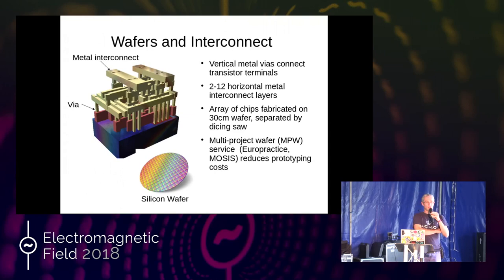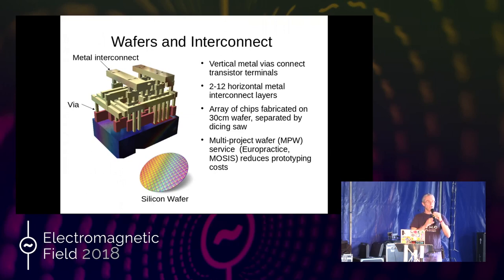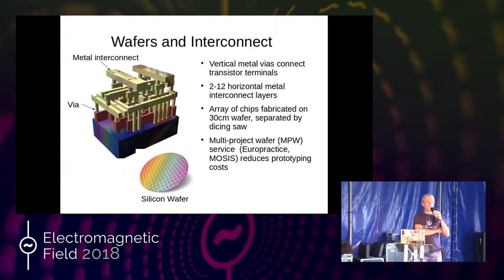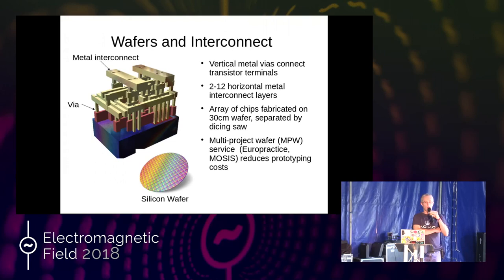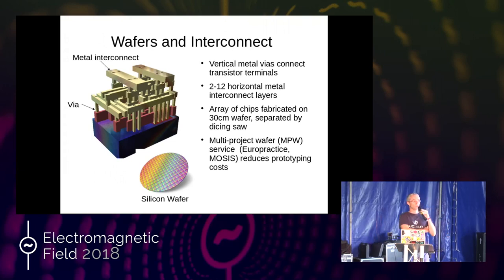On a chip you have transistors, resistors, capacitors, and inductors. To interconnect them you have metal layers, with vertical metal vias coming up from each device, and typically between 2 and 12 metal layers. Chips are fabricated on silicon wafers typically 30 centimeters in diameter, and after fabrication the chips are separated using a dicing saw.